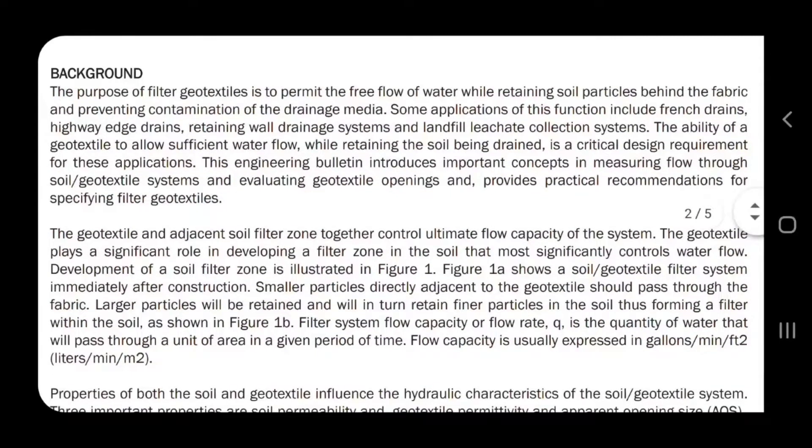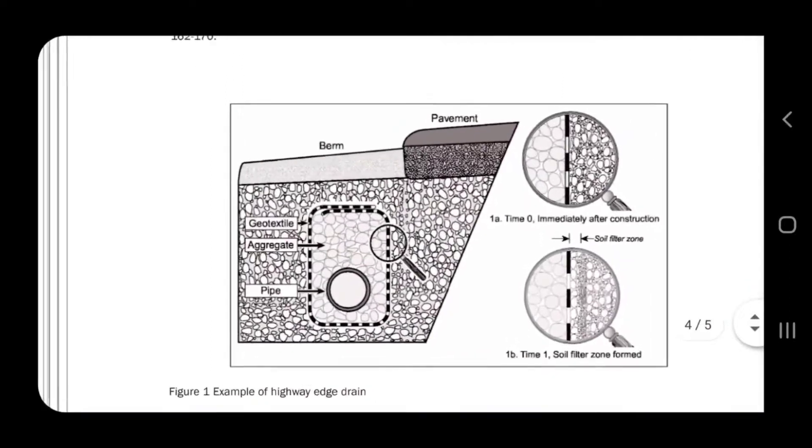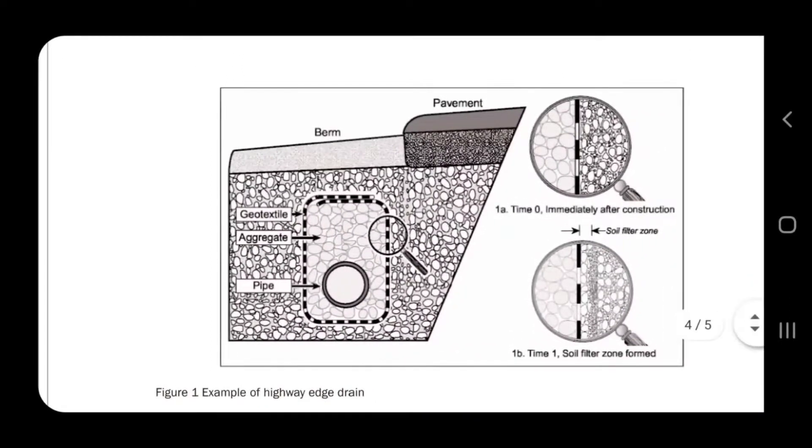...because it gives all the details to how this fabric works. So here's a nice little diagram for you. This diagram here was done on a road construction scenario - a highway edge drain is what this is. So they show a pipe and they show burrito wrap, and then they show all the native soil.